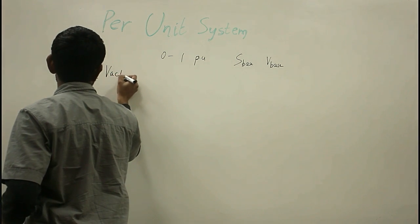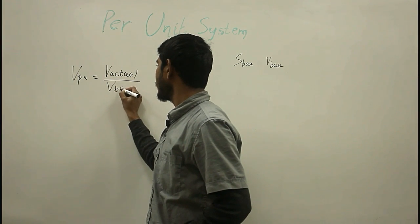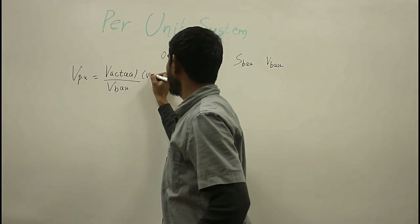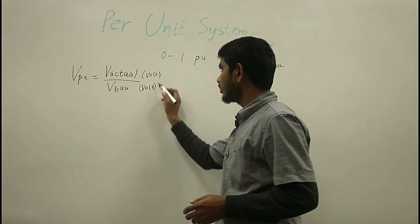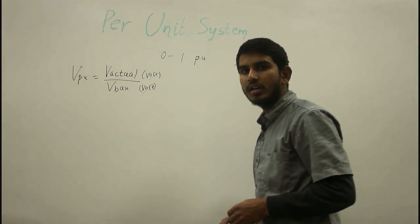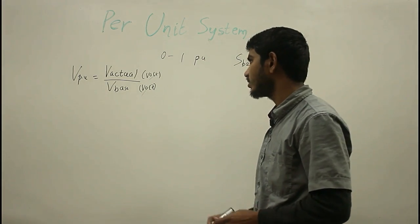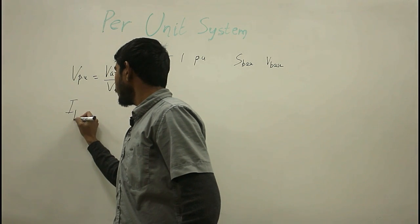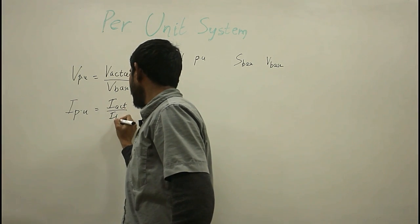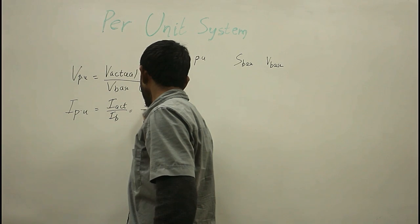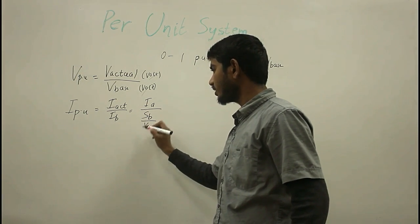V per unit can be given by V actual divided by V base. The units are volts and volts — since they have the same units on numerator and denominator, the unit gets cancelled, and hence per-unit quantities are unitless, also called fractional unitless quantities. I per unit is equal to I actual divided by I base, where I base can be given by S base upon V base.